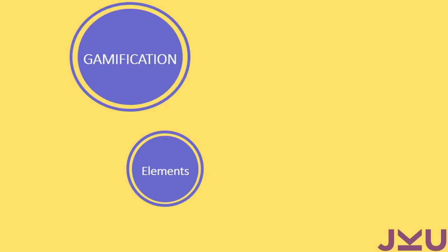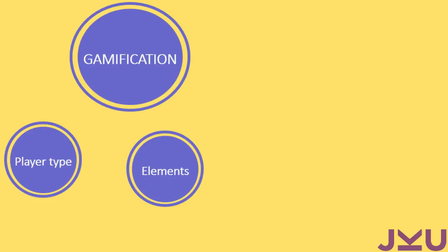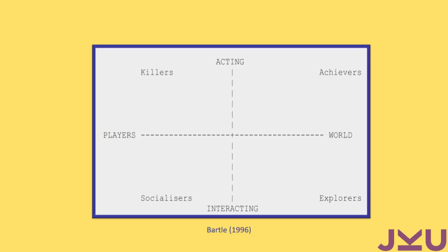Related with gamification, I also discovered player types. We have the four player types that Celay showed us today in the morning: the killers, who want to act on or about the other players; the achievers, who want to act on the world, that is our game; the explorers, who want to interact with the game; and the socializers, who want to interact with other players. There are other classifications, but I think this one is really useful because it gives a clear general idea about player types.